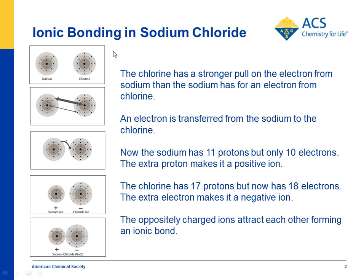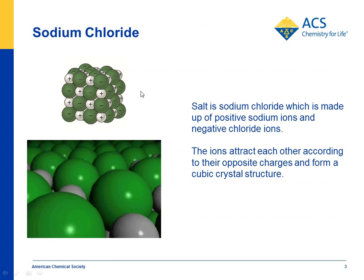We also give a series of pictures so that you can take students step by step through what they saw in the video — that chlorine had a stronger pull for electrons, the electron transferred to the chlorine, making chlorine a negative ion and sodium a positive ion, and that they came together to form an ionic bond.